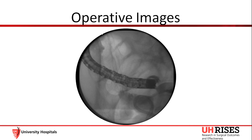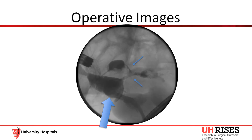We then turned our attention to the colocutaneous fistula and used a colonoscope to advance the scope through the stoma until we reached the cecum. We were unable to definitively identify the colonic fistula, so contrast was injected through the IR drain. This demonstrated a serpiginous tract to the base of the cecum that was remote from the ileocecal valve. The fistula tract is seen here identified by the small arrows filling the cecum, as well as the cavity, which is identified by the large arrow.